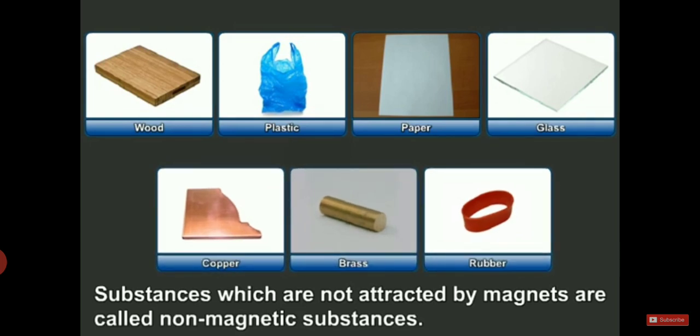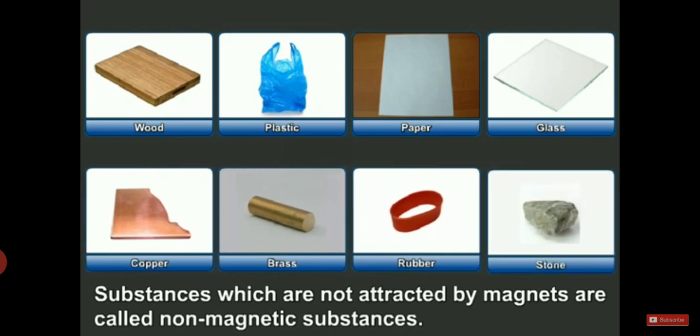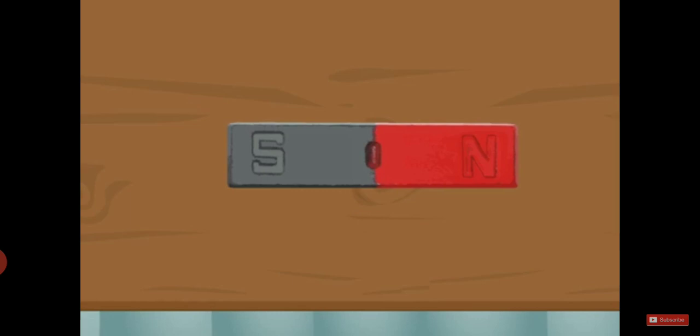Let's talk about another property of the magnet: the two poles of the magnet. A magnet has two poles, north pole and south pole.